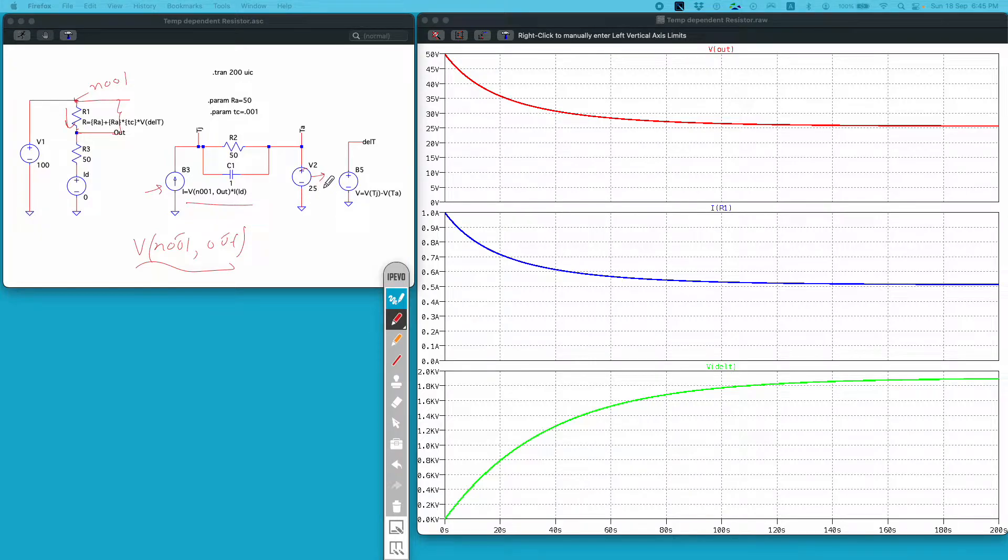Here I have kept it to be 25 degree Celsius. These 2 nodes give me the junction temperature and the ambient temperature and difference of these 2 nodes will give me the delta T.